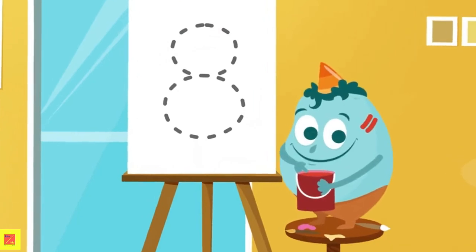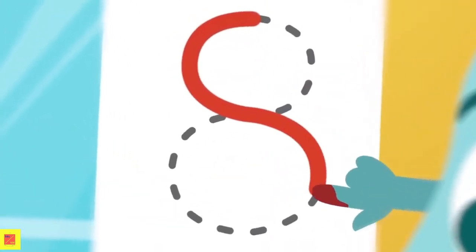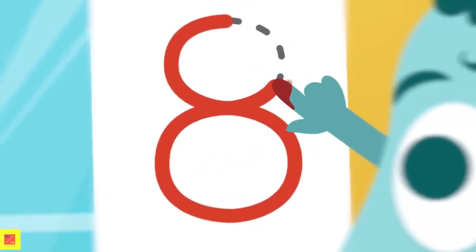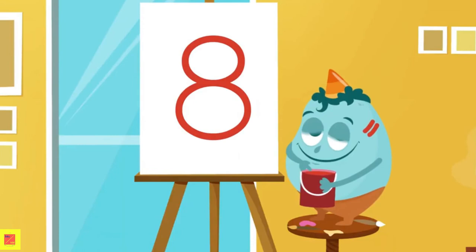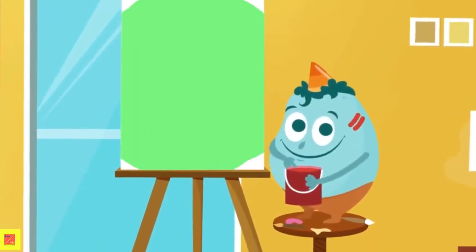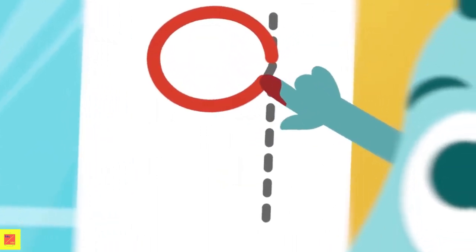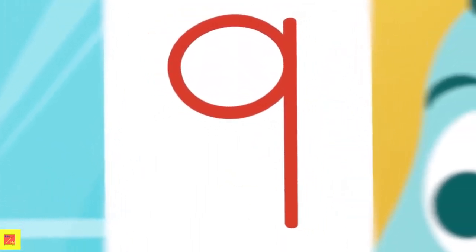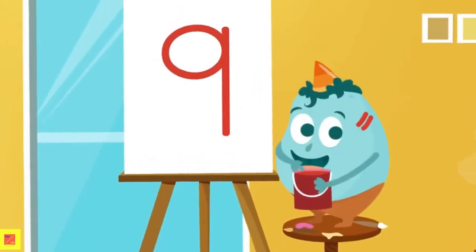Let's look at this one. Here, we make a small curve, then another one this way, and then we go up and do the same thing. And this number is? Number 8. That's it. For the next number, we have to make a circle up here, and when we finish that, we go straight down. What number is it? Number 9. Very good.